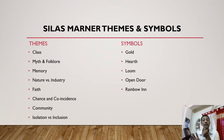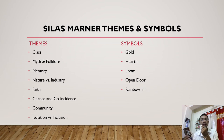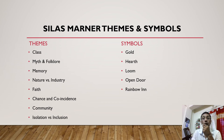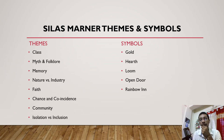There are very important symbols and themes used in this novel. Major themes include class — upper class, lower class, middle class, and aristocratic class — myth and folklore, memory, nature versus industry, faith, chance and coincidence, community, isolation, and inclusion. Important symbols include gold, the hearth, the loom, the open door, and the rainbow. The writer has, with a very expert and delicate hand, used these themes and symbols deliberately to give a clear picture of Victorian society after industrialization.